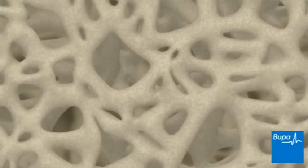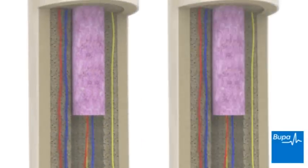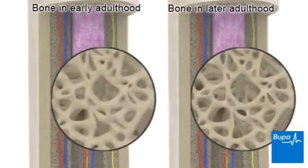Here we've zoomed in to show the structure of the bone. Throughout your life your bone is constantly being broken down and replaced. In early adulthood, mid-twenties to mid-thirties, your bones are at their strongest. This is because at this point your bone is being broken down and replaced at about the same rate. This is known as the peak bone mass.